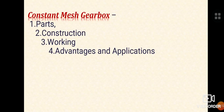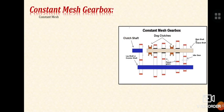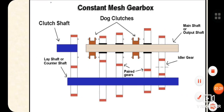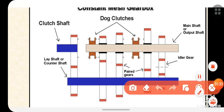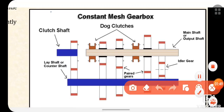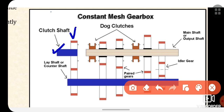In the constant mesh gearbox, we will focus on its types, construction, working, advantages, and applications. Here is a picture of the constant mesh gearbox — I will elaborate in a shorter manner, then we will discuss each component. The clutch shaft is connected with the driving shaft or crankshaft, which receives power from the engine. One gear is mounted over this clutch shaft.